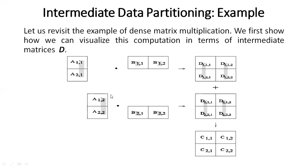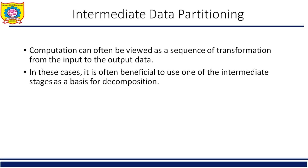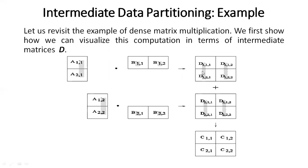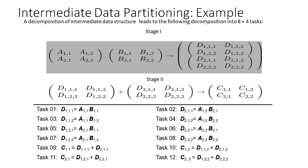We then need to add these intermediate results as per the formula of matrix multiplication — multiply, then add. Adding the two resultant matrices, we finally get the final resultant matrix of this matrix multiplication. This is what intermediate data partitioning is. Decomposition of an intermediate data structure leads to a decomposition into multiple stages, which is explored in more detail.